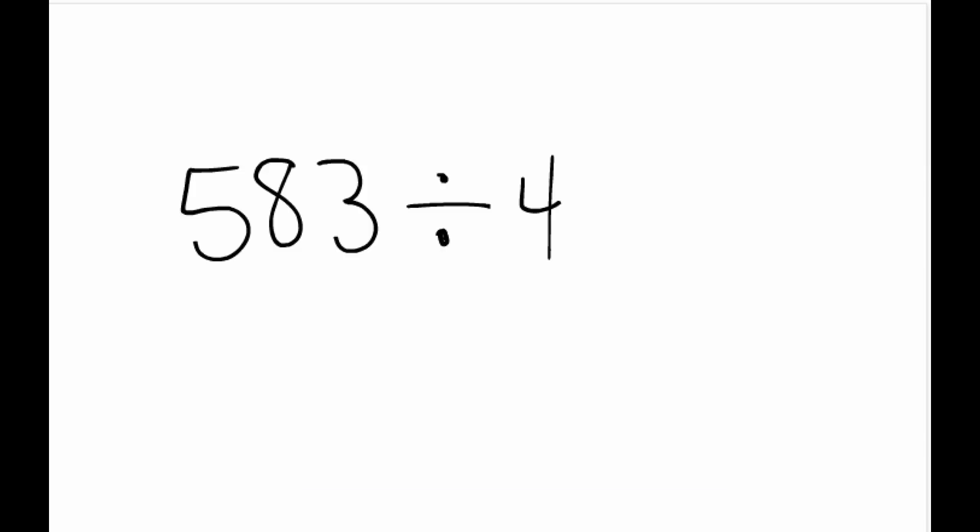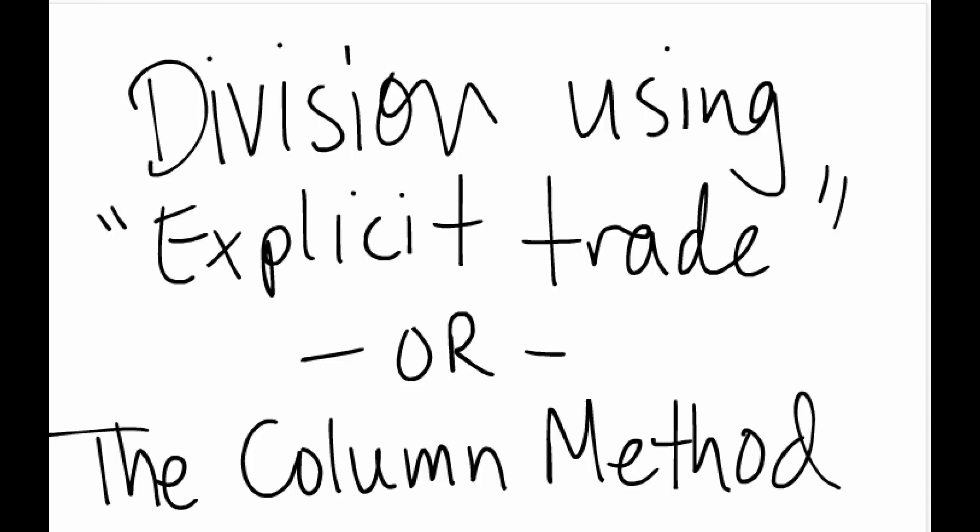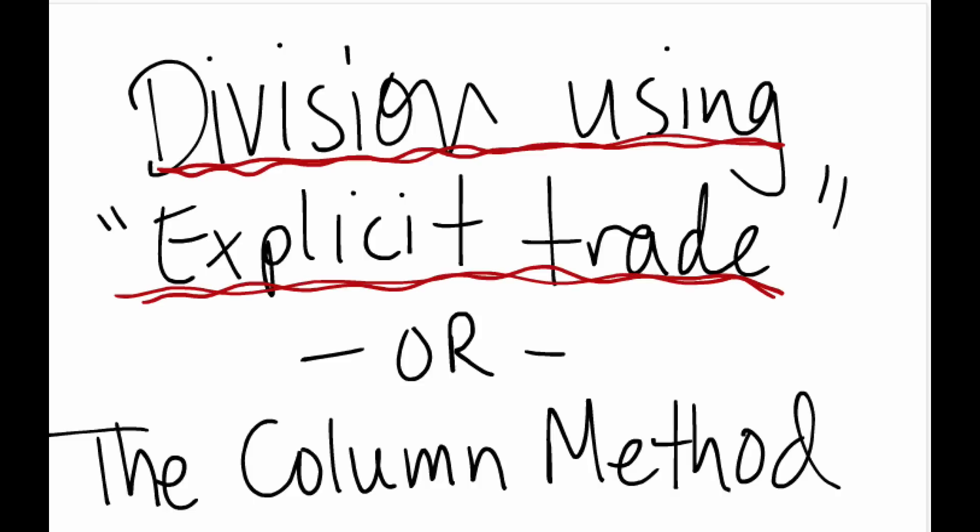In this video I'm going to show you how to do 583 divided by 4. I'm going to use the division using explicit trade. That's a fancy name using a special technique. A lot of students just call this the column method of division.